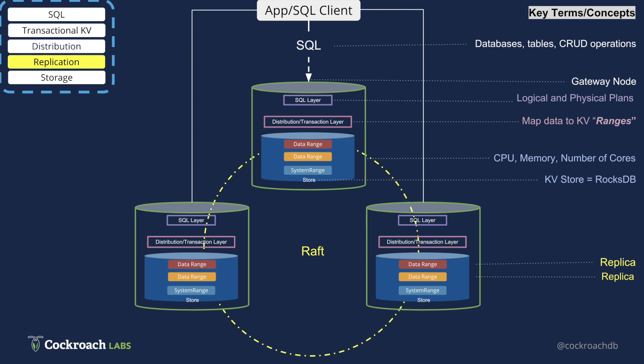The final feature to understand is geo-distribution. You can have all your nodes in the same location or in different locations, and the way to do that is by defining the localities of the nodes. And that is what causes network latency to come into the picture.